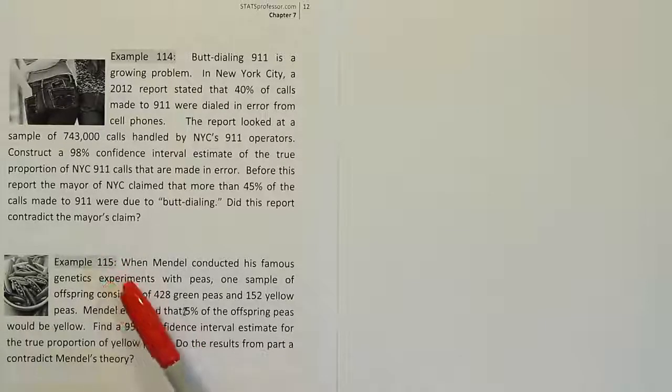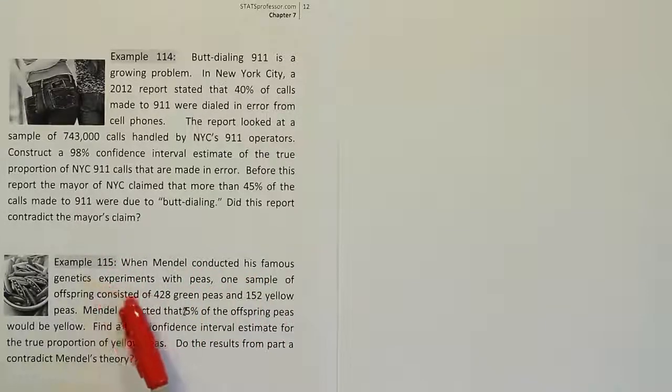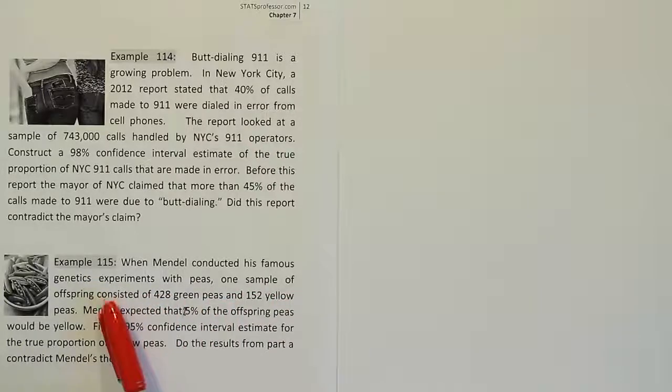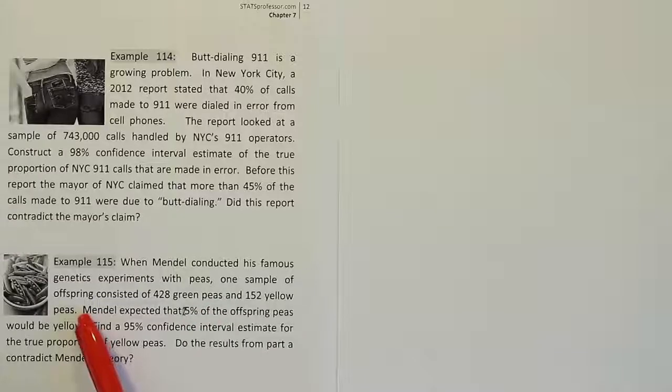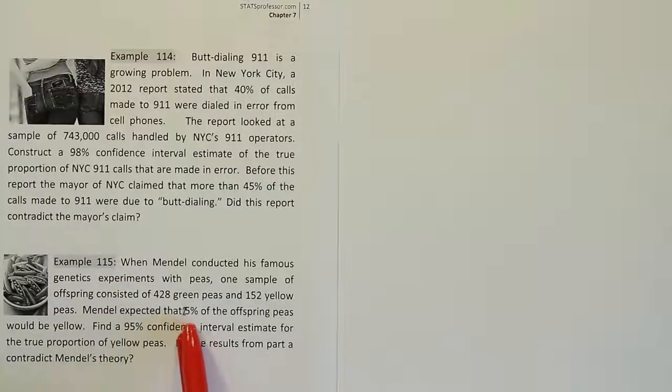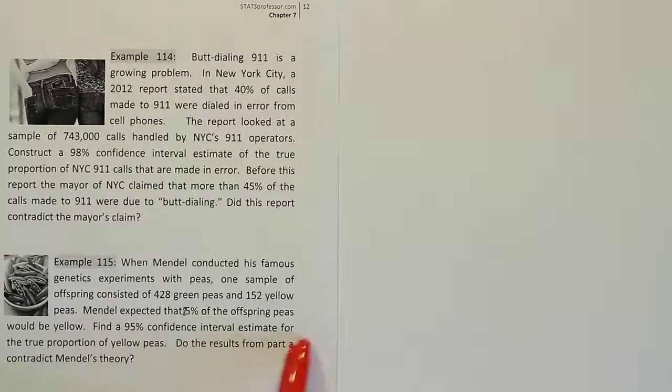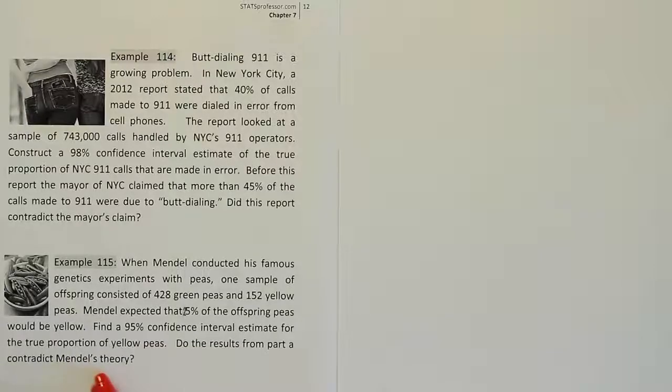Example 115. When Mendel conducted his famous genetics experiments with peas, one sample of offspring consisted of 428 green peas and 152 yellow peas. Mendel expected that 25% of the offspring peas would be yellow. Find a 95% confidence interval estimate for the true proportion of yellow peas. Do the results from part A contradict Mendel's theory?